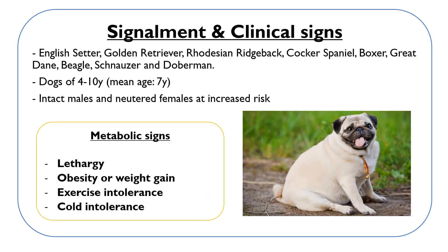Hypothyroidism can occur in dogs of any breed, but reported breed predispositions include English Setter, Golden Retriever, Rhodesian Ridgeback, Cocker Spaniel, Boxer, Great Dane, Beagle, Schnauzer and Doberman. It is more common in dogs of 4 to 10 years old with a mean age of 7 years, and intact males and neutered females may be at increased risk.